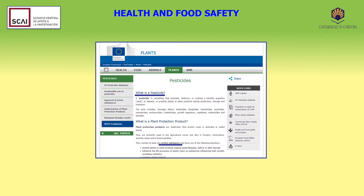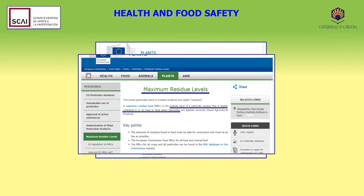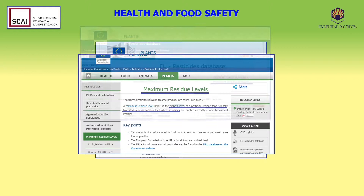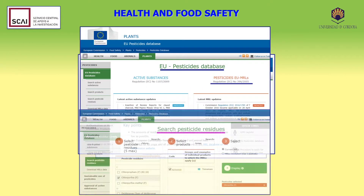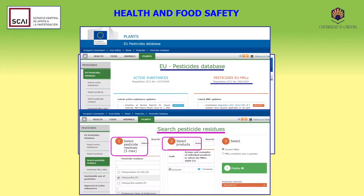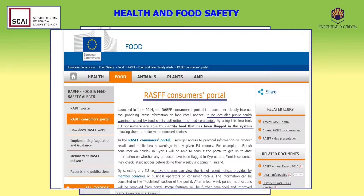The European Commission defines both pesticides and active substances that may be present in food, and their legal limits as MRL, or maximum residue levels. The search for such limits can be carried out for the analytical results obtained. When a pesticide is out of limit in a food, it is notified in the RASFF system.